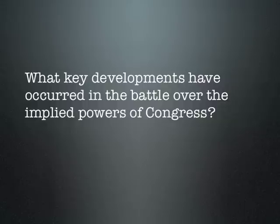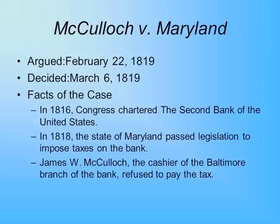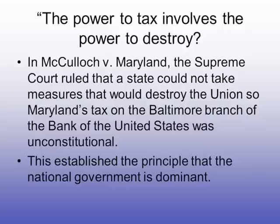What key developments have occurred in the battle over the implied powers of Congress? In McCulloch v. Maryland, argued February 22, 1819 and decided March 6, 1819: in 1816, Congress chartered the Second Bank of the United States; in 1818, the state of Maryland passed legislation to impose taxes on the bank; James McCulloch, the cashier of the Baltimore branch, refused to pay this tax. The Supreme Court ruled that a state cannot take measures that would destroy the Union, so Maryland's tax on the Baltimore branch of the Bank of the United States was unconstitutional. This established the principle that the national government is dominant.